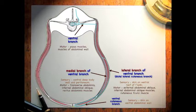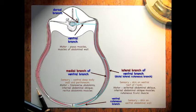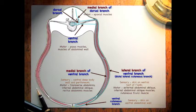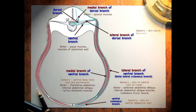Unlike the dog, the cutaneous trunchi muscle is also innervated by branches of the spinal nerves in large animals. Turning our attention to the dorsal branch: the medial branch of the dorsal branch simply dives up into the epaxial muscles and innervates those epaxial muscles. The lateral branch of the dorsal branch — because it has both a dorsal and a ventral branch — provides sensory to the skin above the transverse processes as well as sensory to the skin on the dorsal half of the flank.